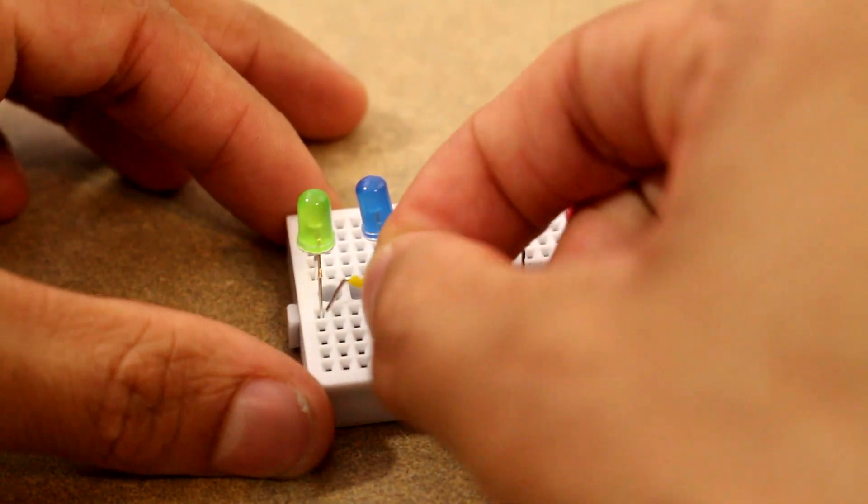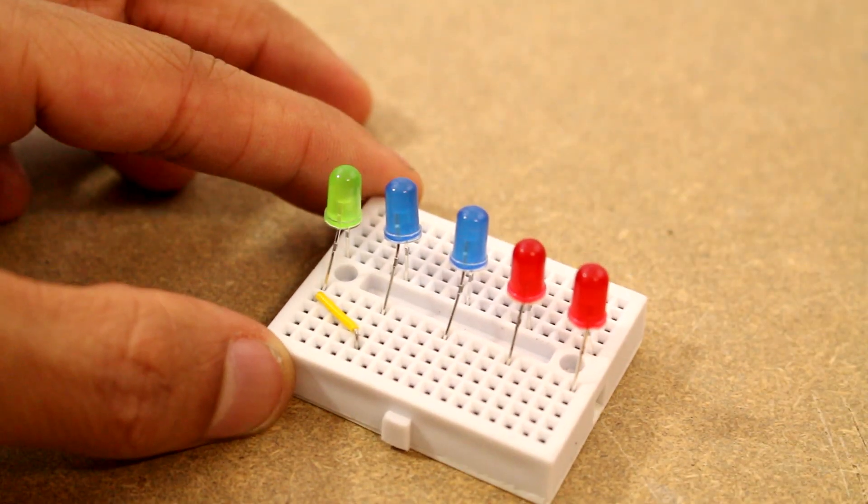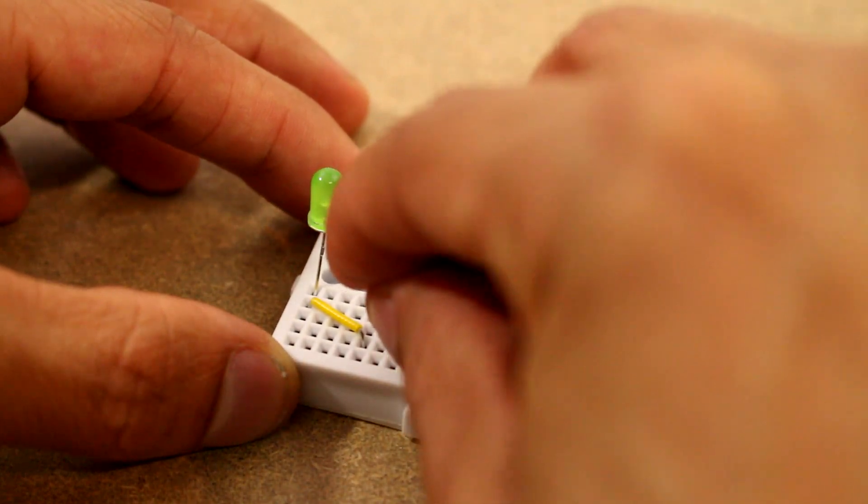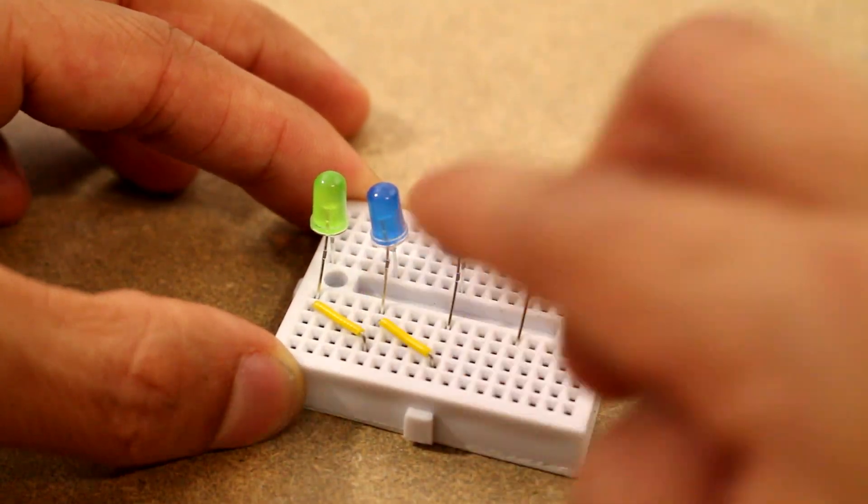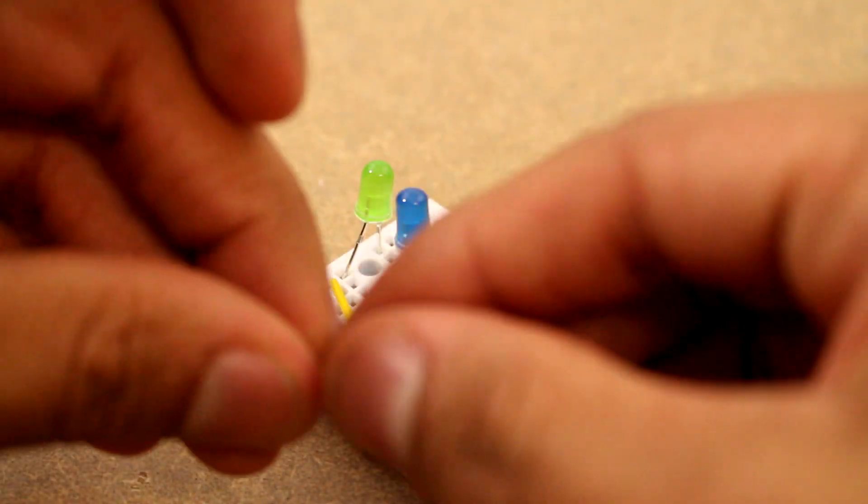Now I'm going to connect the ground side of the LEDs. So that is the negative side and I'm just going to connect them with wires. If you don't have these nice clean wires, you can also use staples. Those do a pretty nice job too.